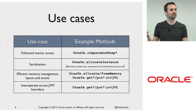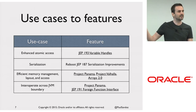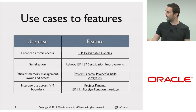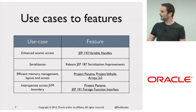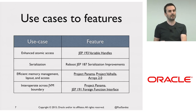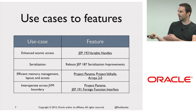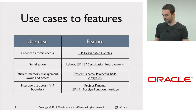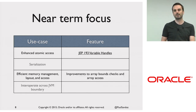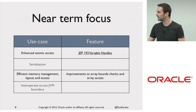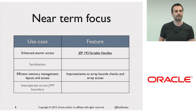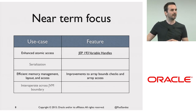We can map these use cases to features. Enhanced atomic access maps to variable handles. Interoperating across the JVM boundary maps to Project Panama foreign function interface. Efficient memory layout and access covers Project Panama, Project Valhalla, and arrays 2.0. There's a nearer-term focus where we can tackle some use cases now and some later. For efficient memory layout and access I'm going to talk about a few small things around array bounds checks and array access, and finding the right hotspot intrinsic — the most general one I can reuse in lots of other places.